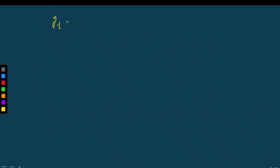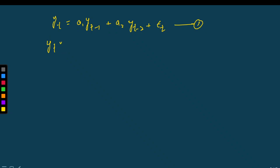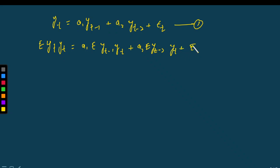We start with the AR2 model: yt = a1·yt−1 + a2·yt−2 + εt. Using the Yule-Walker equation, we multiply equation 1 by yt on both sides, giving: a1·E[yt−1·yt] + a2·E[yt−2·yt] + E[εt·yt]. Then multiply the same equation by yt−1: yt·yt−1 = a1·E[yt−1·yt−1].